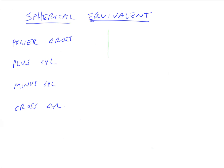For the power cross — and we're going to keep using this same formula — what's the spherical equivalent of that? The easiest way is to average the two together. We have plus one plus three equals plus four, divided by two equals plus two. So the spherical equivalent of that is plus two, by figuring out the average between the plus one and the plus three.